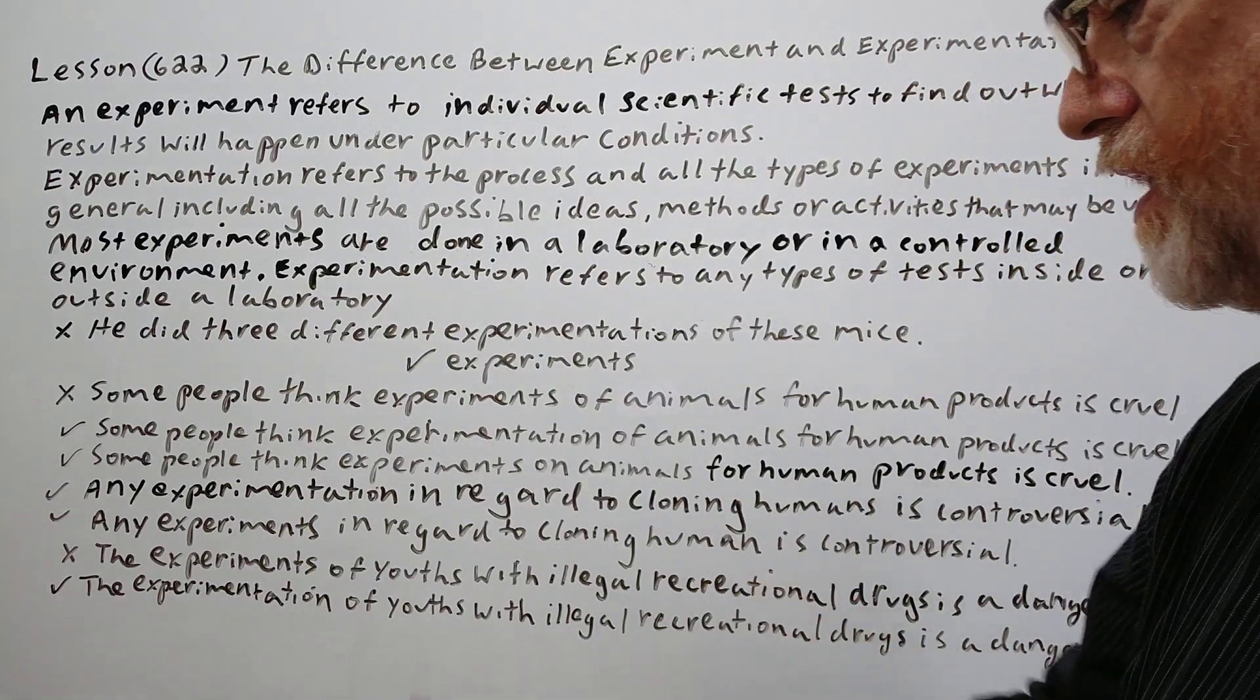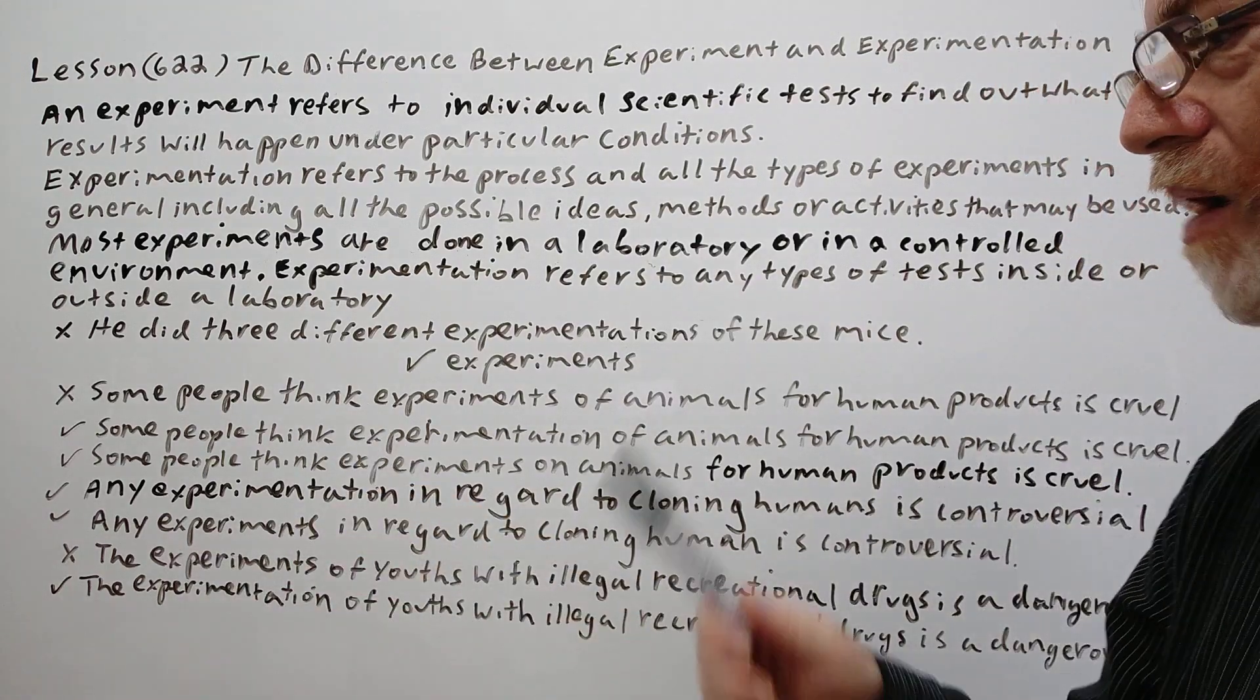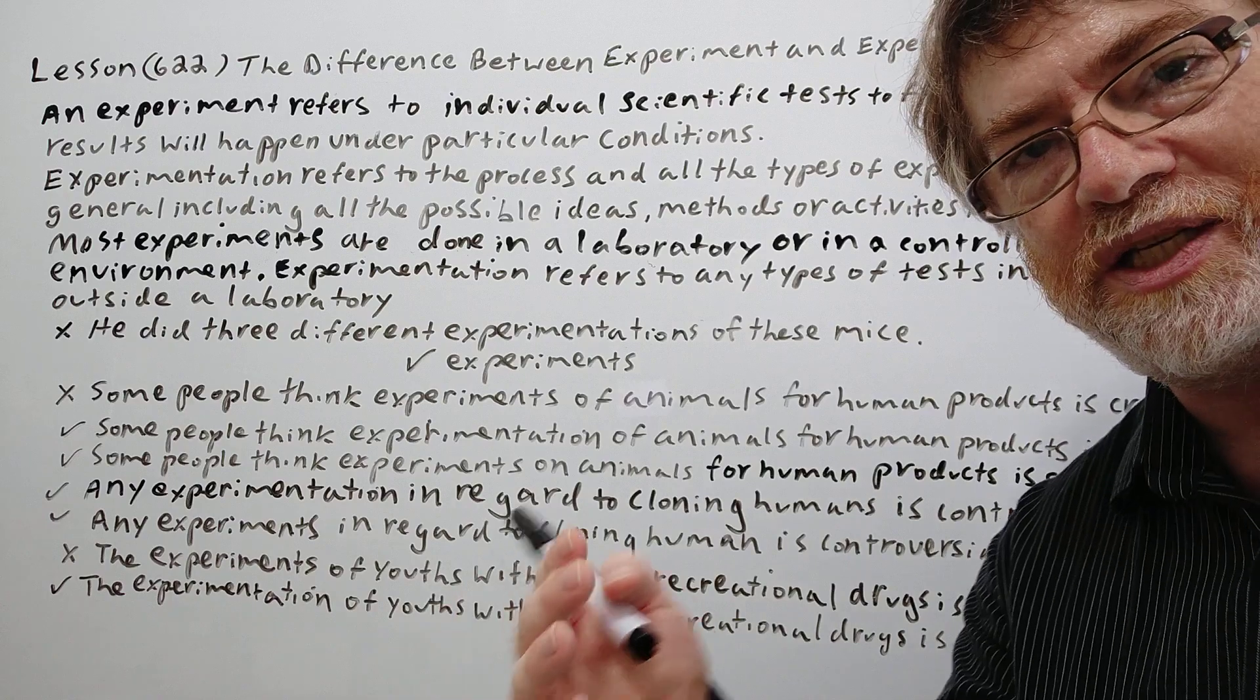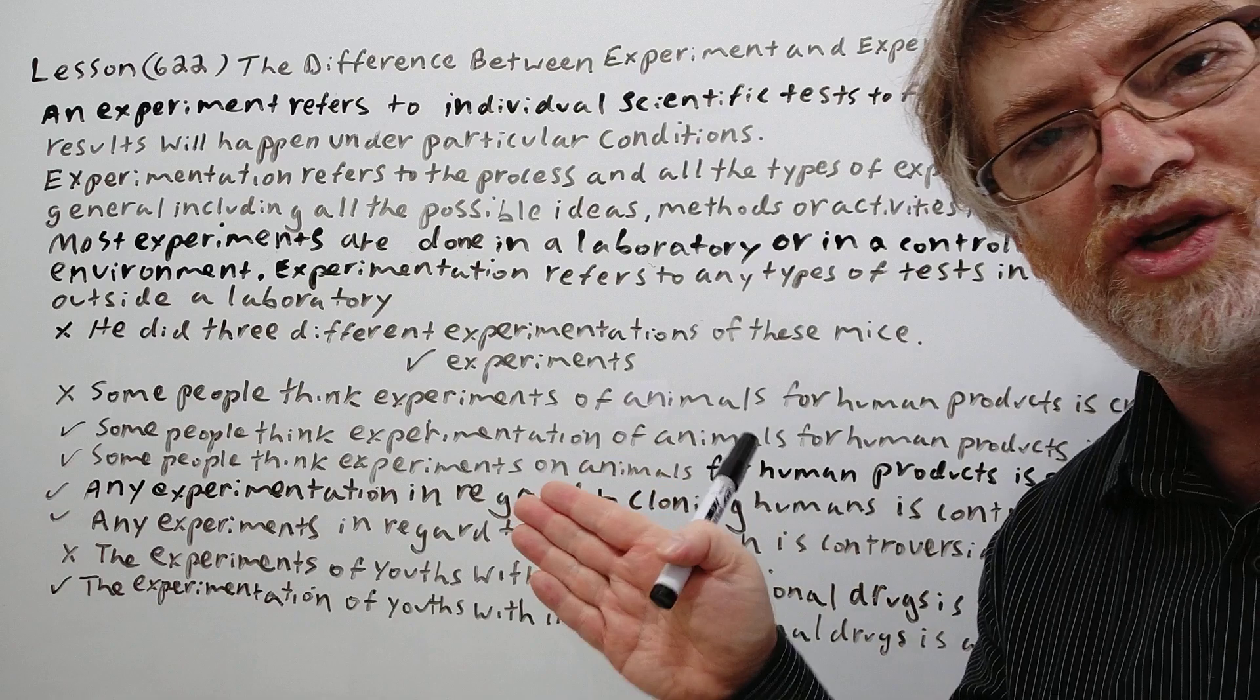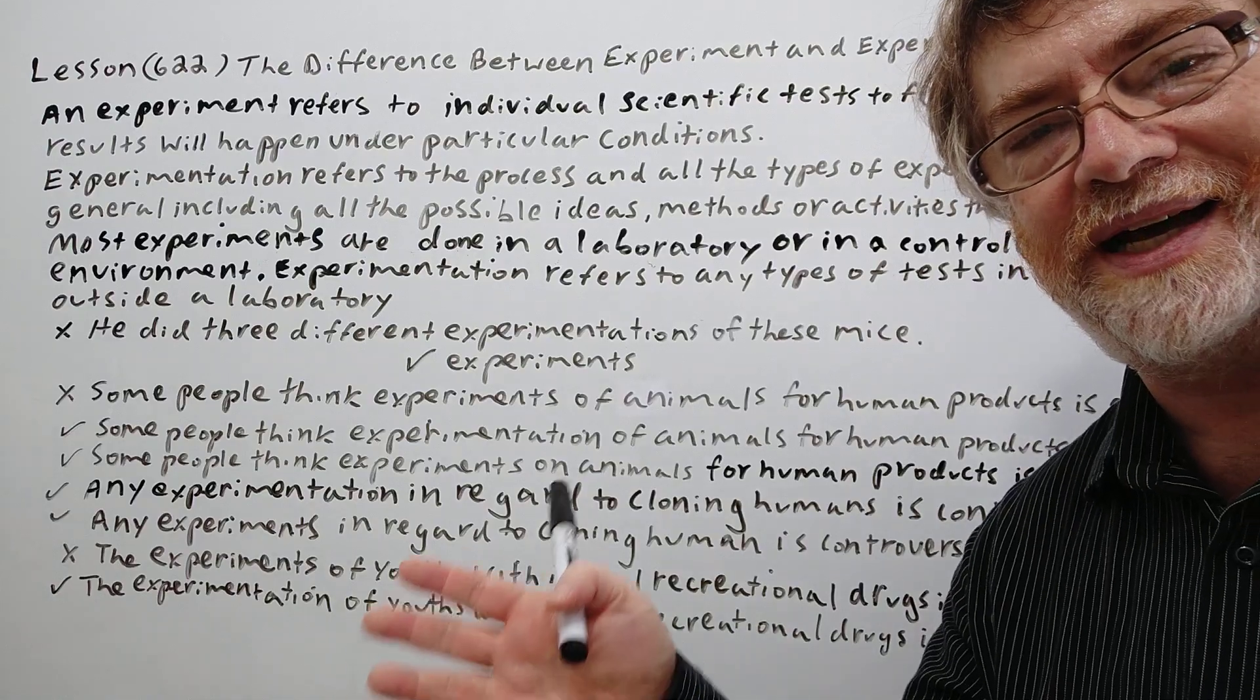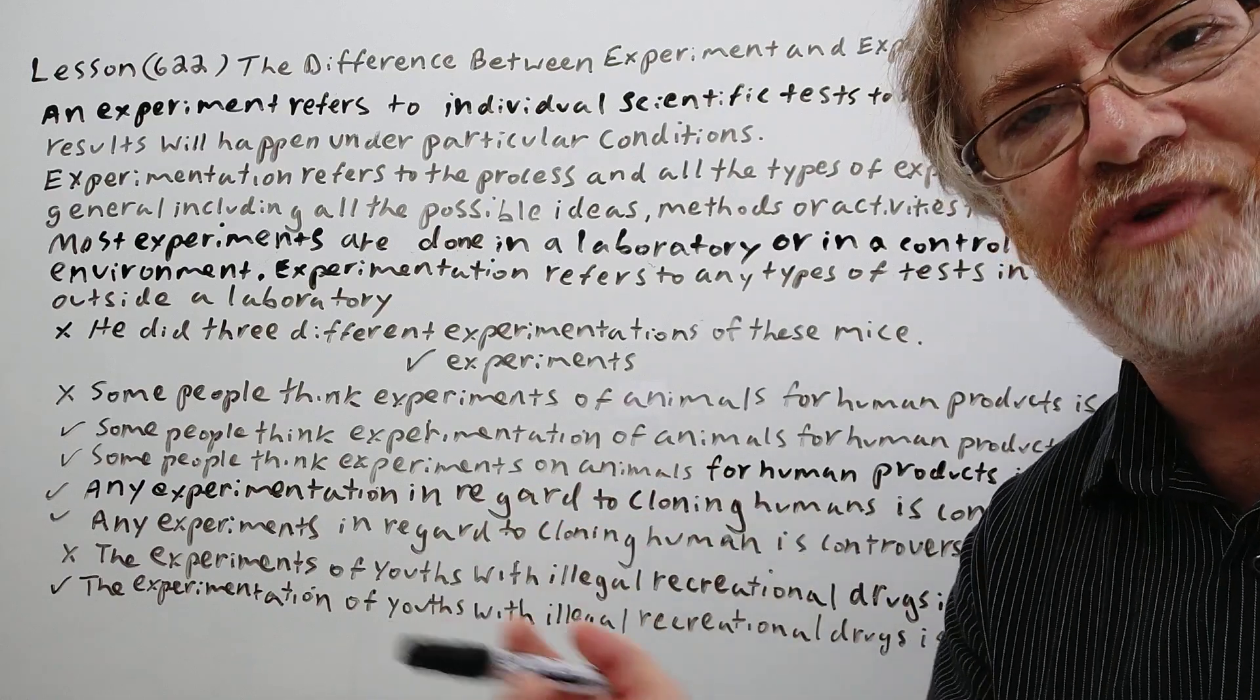And let's look at the last one here. The experiments of youths with illegal recreational drugs is a dangerous game. Now here this would be wrong. Why is this wrong? Well, when young people are trying drugs, they're not controlling it. It's not in a laboratory. They are trying it out for their individual fun or enjoyment, but it's not really a controlled experiment test. They're not writing down the data or finding out the information.